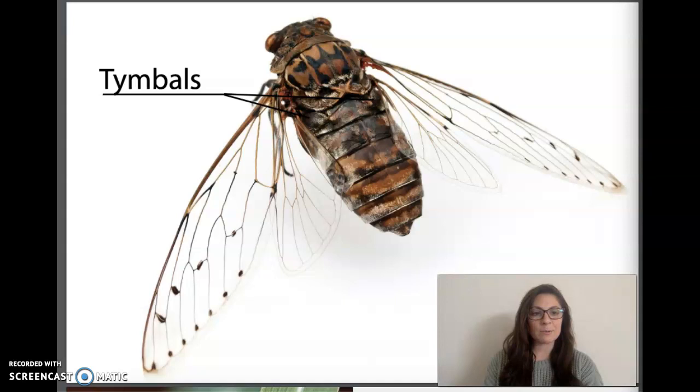Look closely at the abdomen of a cicada. On its underside, close to the thorax, a cicada has a pair of sound-producing organs called timbals. These ribbed membranes are a little like the skin of a drum. The cicada uses its muscles to vibrate these drum-like organs.